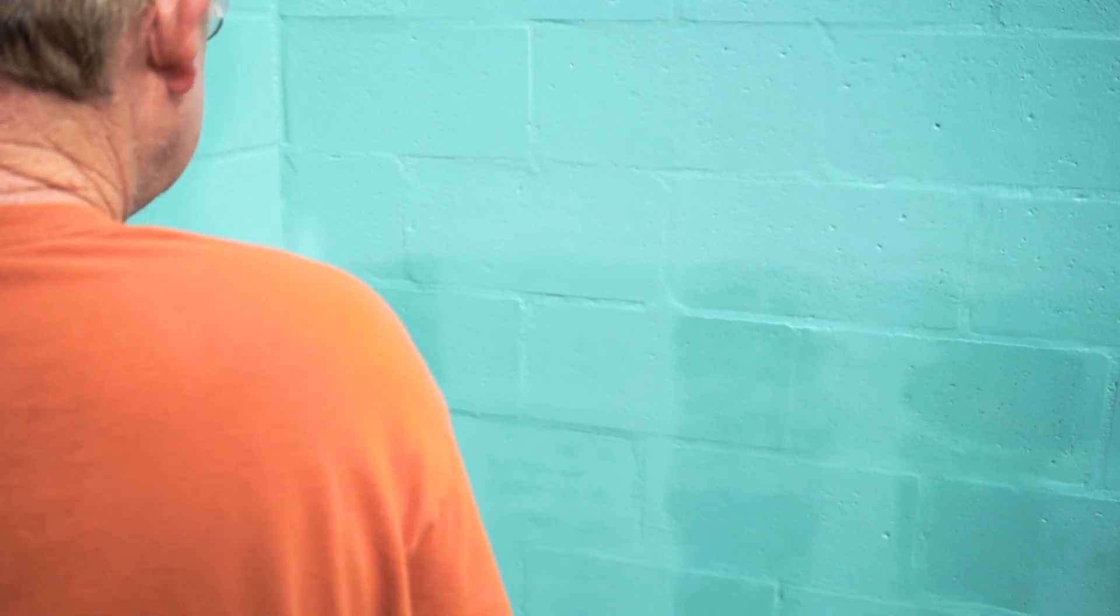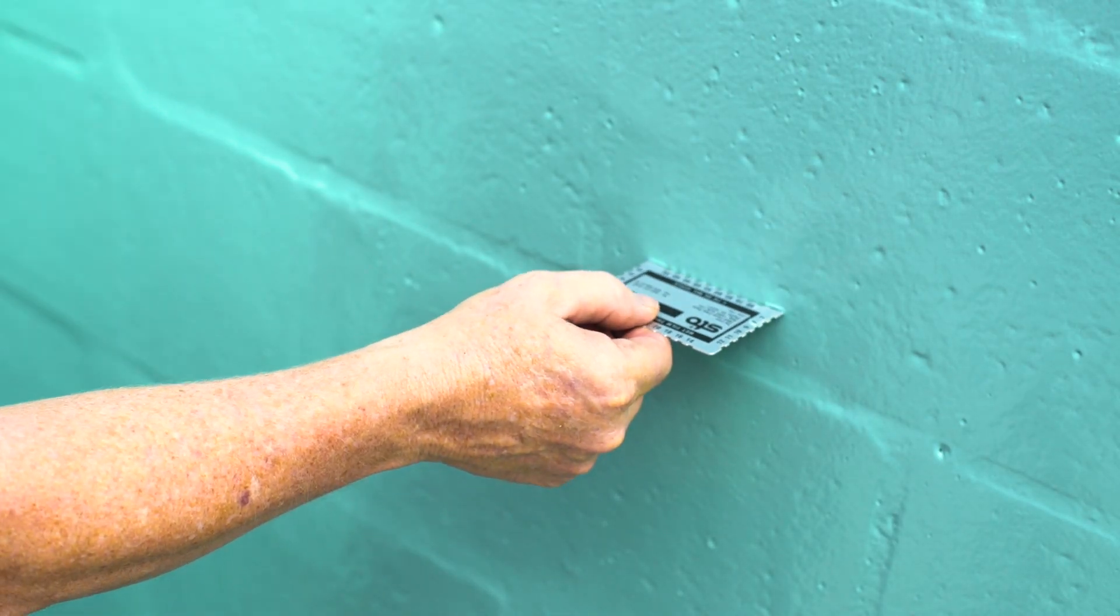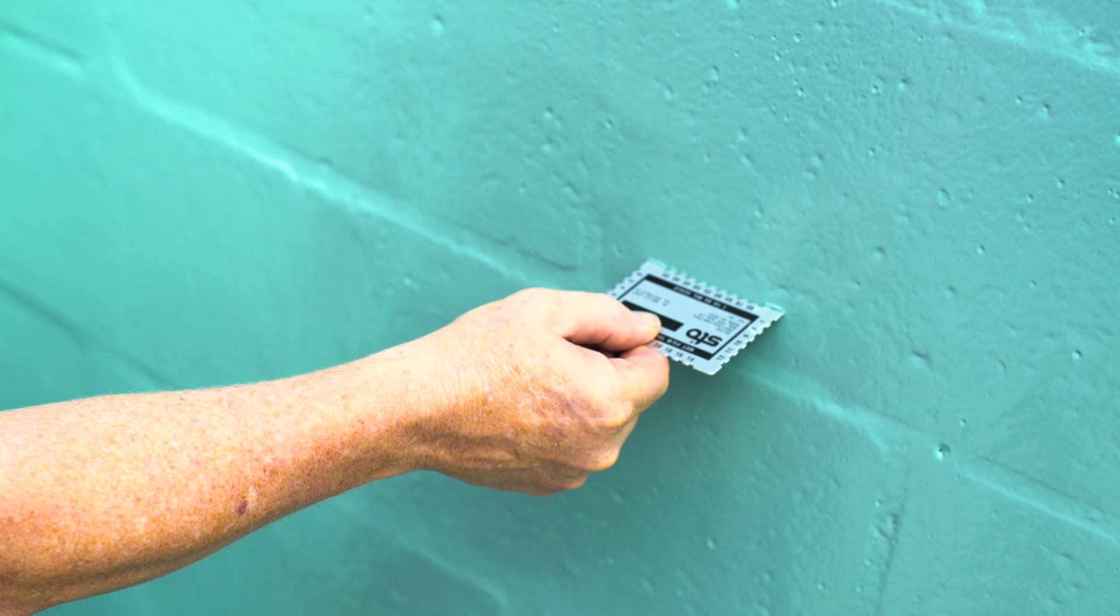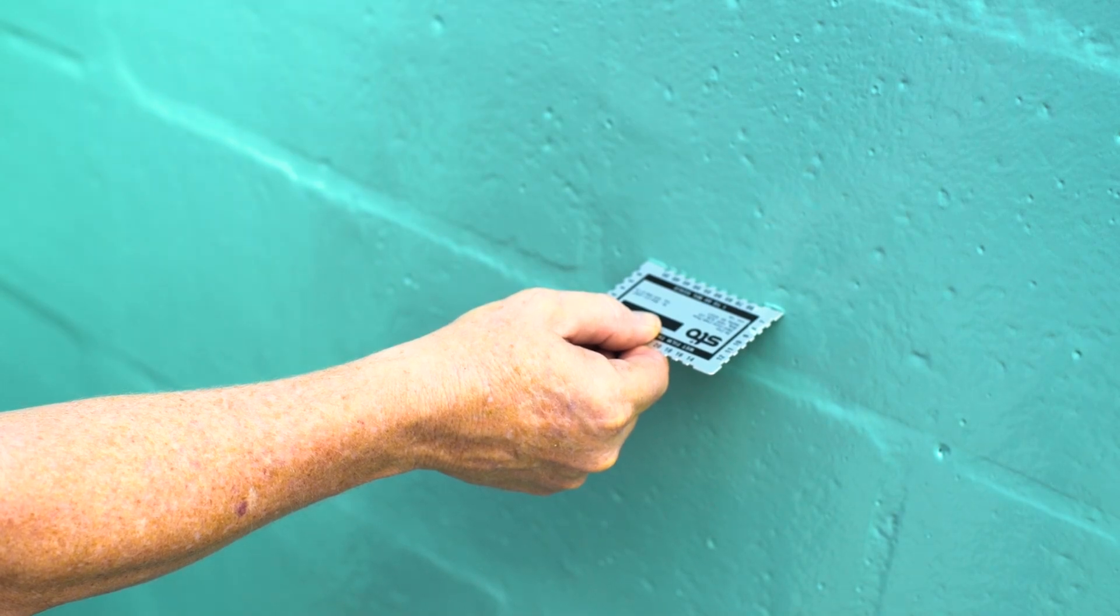StoGuard AirSeal may also be used on sheathing. For a dry film thickness of 40 mils, StoGuard AirSeal should be applied at a minimum of 66 wet mils.